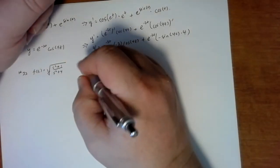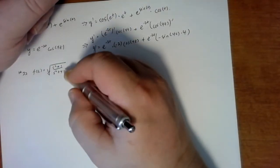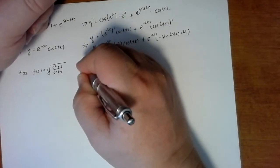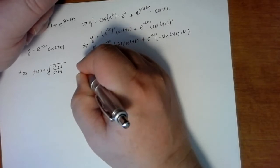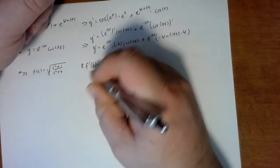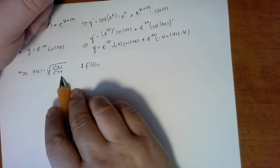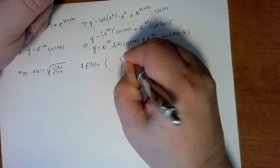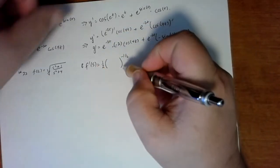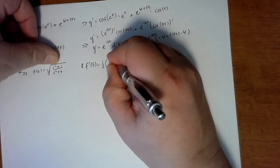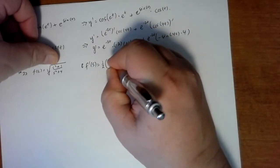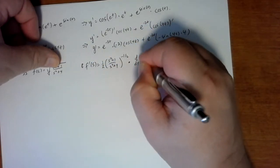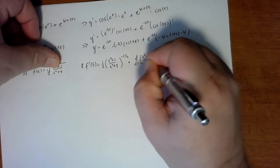Number 22 has quite a bit going on. f prime of s — the square root function is the outside function, so the derivative of that would take the one-half down, the inside function stays the same, but then you multiply by the derivative of the inside function — the derivative with respect to s of (s squared plus 1) divided by (s squared plus 4).